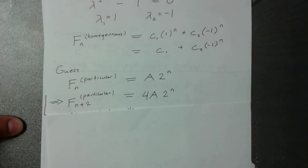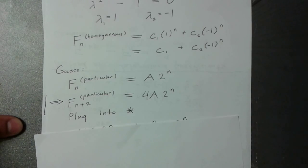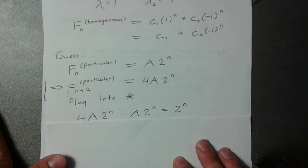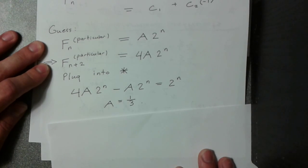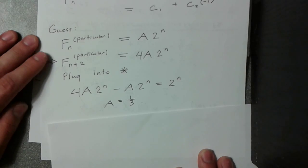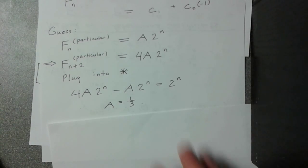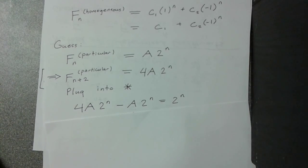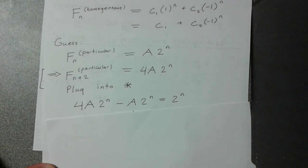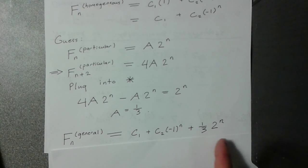Using the superposition property, all you have to do is find the particular solution, and then add it to the homogeneous solution. The guess for the particular solution — this is where the method of undetermined coefficients comes in — you guess that it's just a constant times 2^n, because the input function is 2^n. You look at what the (n+2) term would be, plug it into the recurrence relation, and solve for the constant a. That gives you one-third times 2^n as the particular solution. Add that to the homogeneous solution, and by the superposition property, that is the general solution to the non-homogeneous recurrence relation.